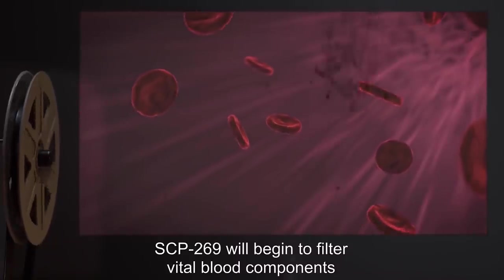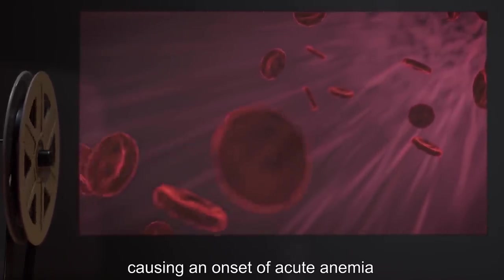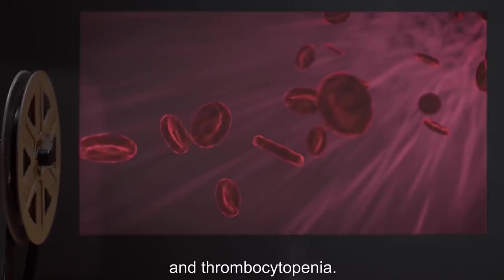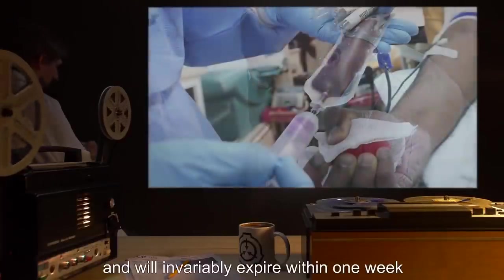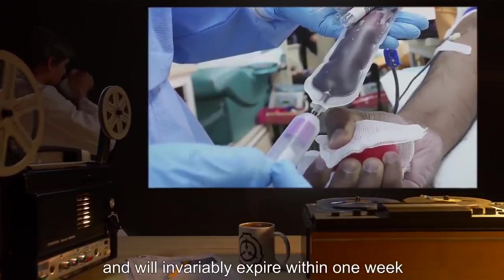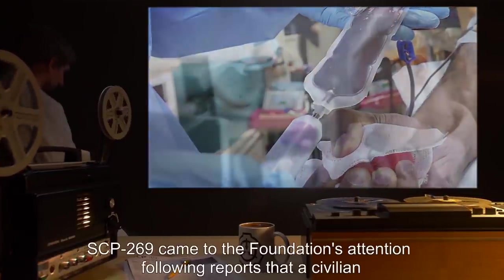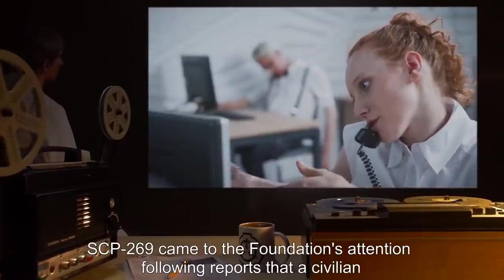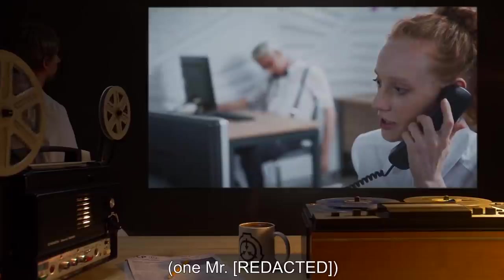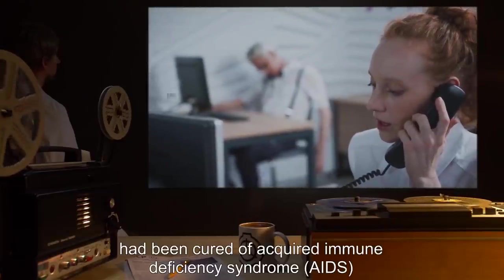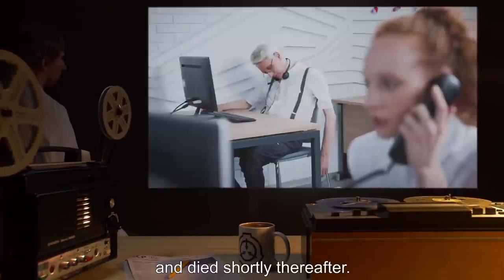In the final stage, SCP-269 will begin to filter vital blood components such as red blood cells and platelets, causing an onset of acute anemia and thrombocytopenia. Hosts that reach Stage 3 quickly weaken and will invariably expire within one week unless massive blood transfusions are given. SCP-269 came to the Foundation's attention following reports that a civilian, one Mr. [REDACTED], had been cured of acquired immune deficiency syndrome (AIDS) and died shortly thereafter.